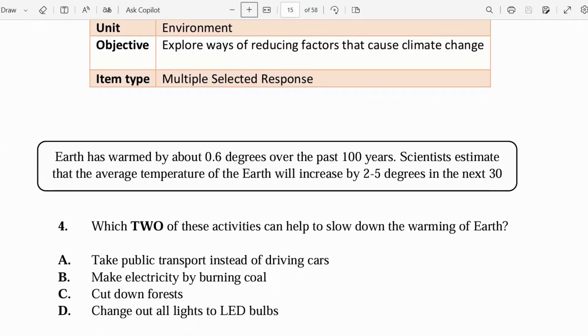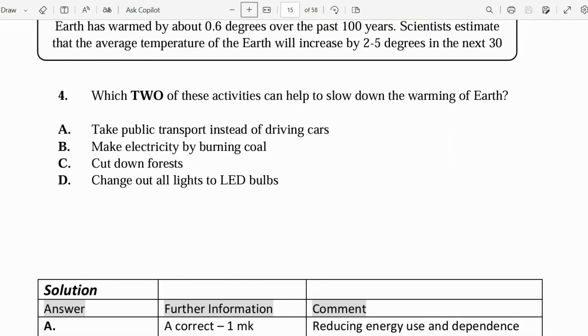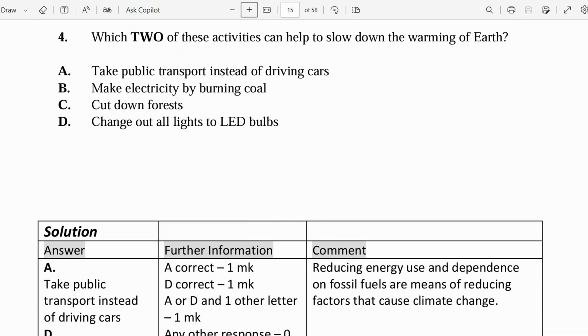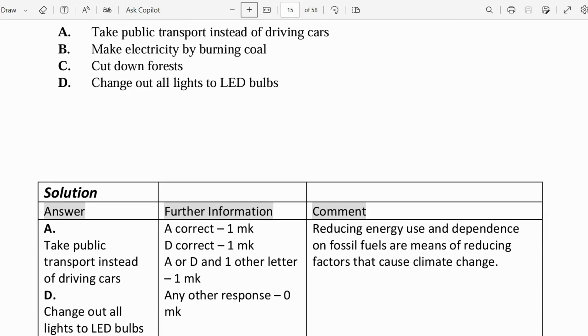Let's move on to number four. Earth has warmed by 0.6 degrees over the past 100 years. Scientists estimate that the average temperature of the earth will increase by 2 to 5 degrees in the next 30 years. Which two of these activities can help to slow down the warming of the earth? And that would be: take public transportation instead of driving cars, as this reduces fossil fuel use, so we can carpool, and also changing all the lights to LED. This also reduces energy consumption, and those are means of reducing factors that cause climate change.